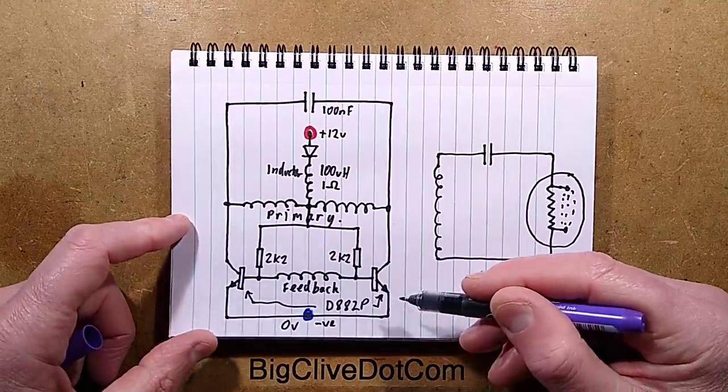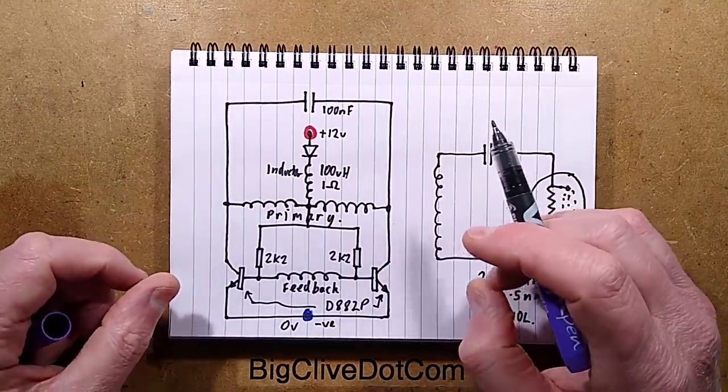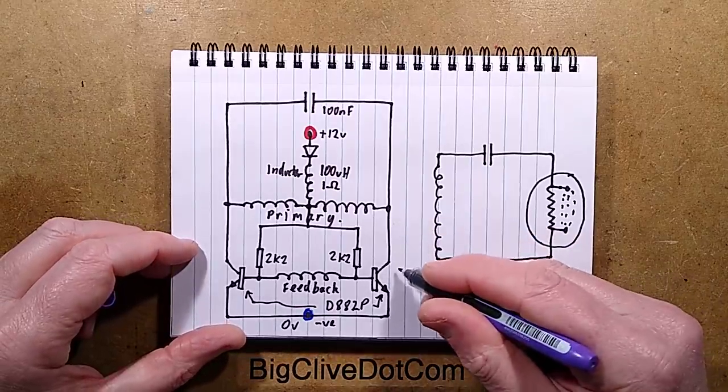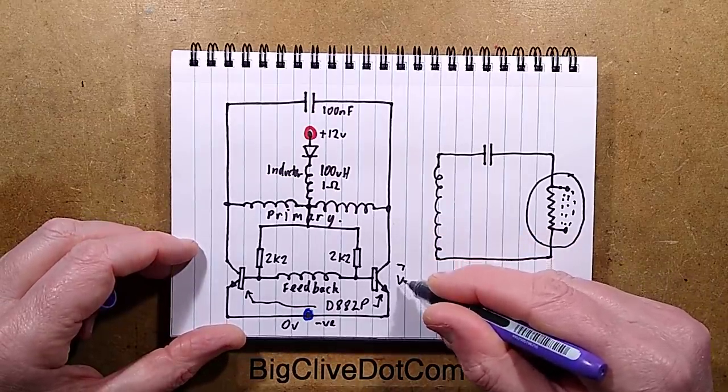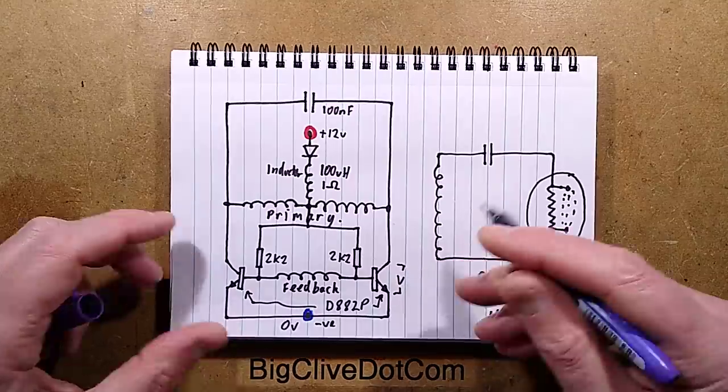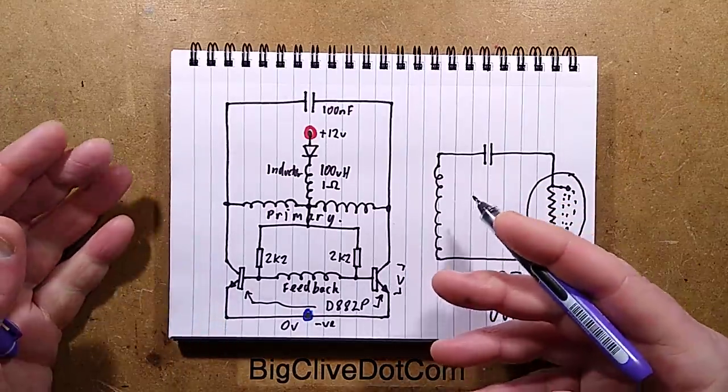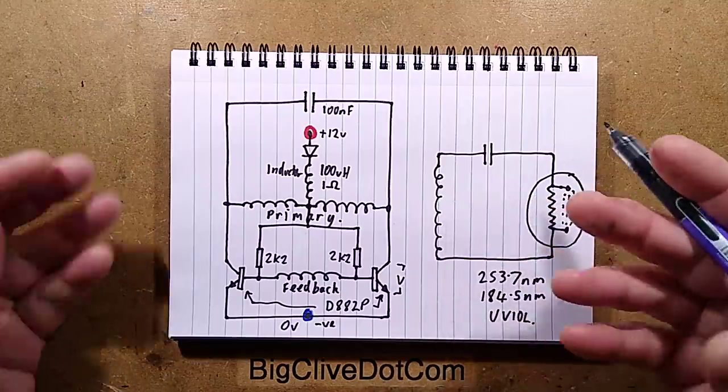There's two transistors which are D882P. They are notable for being fairly high power transistors, but significantly, they've got what they call a low saturation voltage, which means that when they turn on, the voltage dropped across them is much lower than a generic transistor.